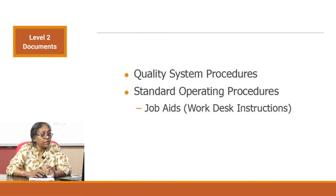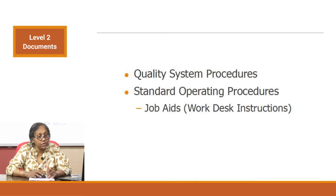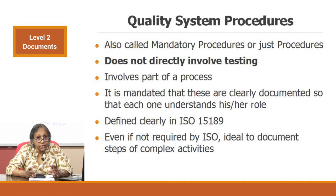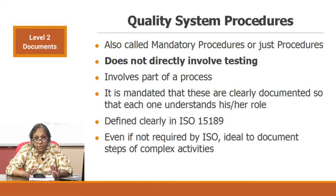There are two sets of procedures: quality system procedures as well as standard operating procedures, both of which can be depicted as job aids or work desk instructions. We will see in detail all three groups of documents. First, we will start with the quality system procedures. They are also called the mandatory procedures, or as the ISO standard simply describes them — procedures. These QSPs do not directly involve testing.